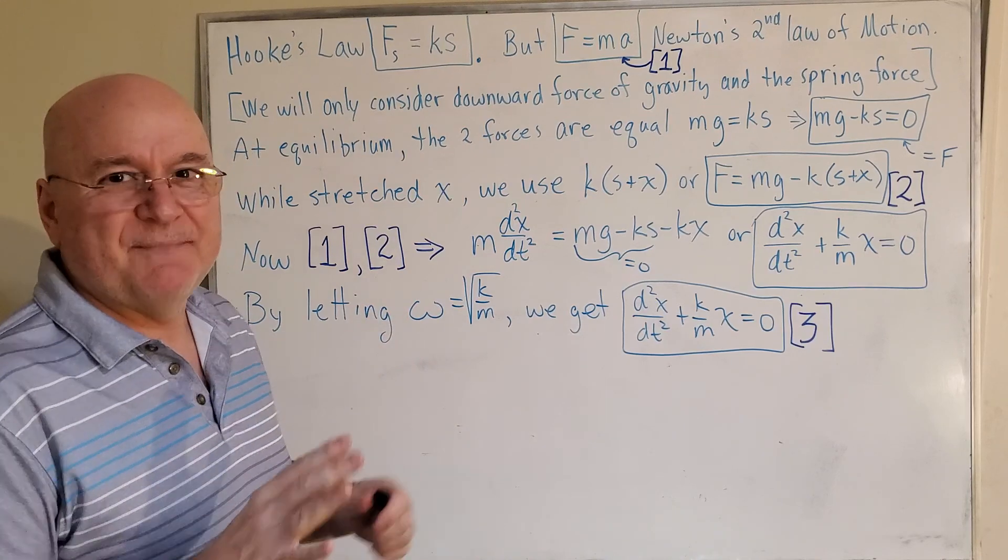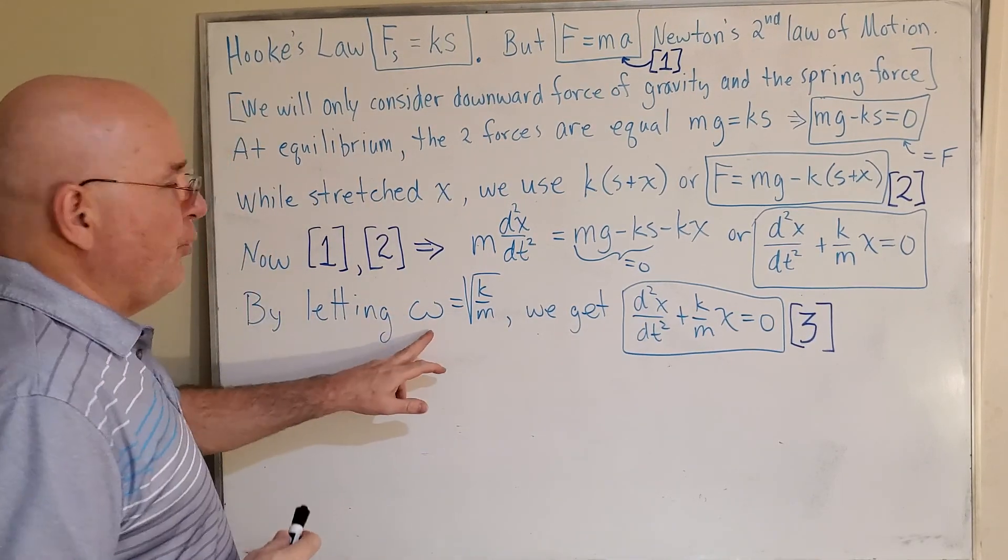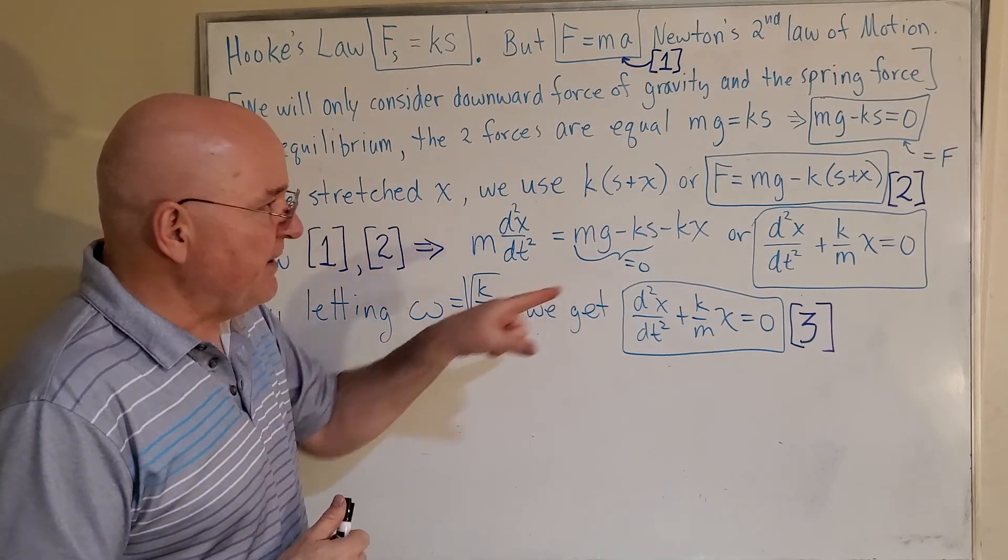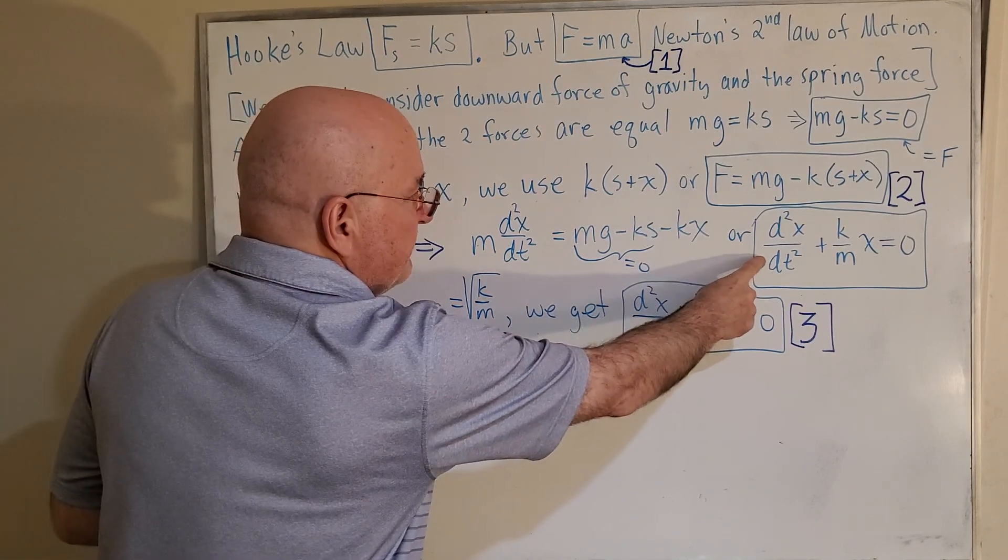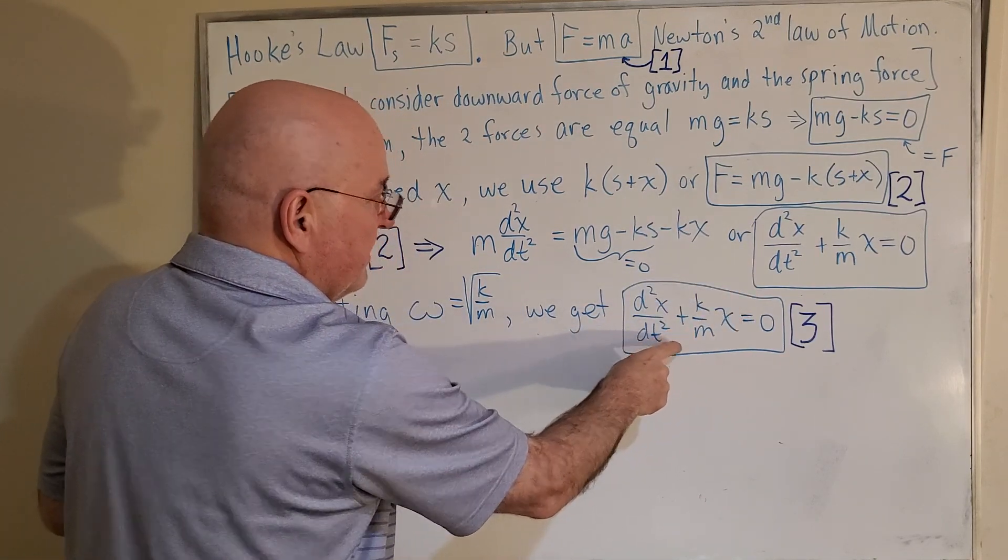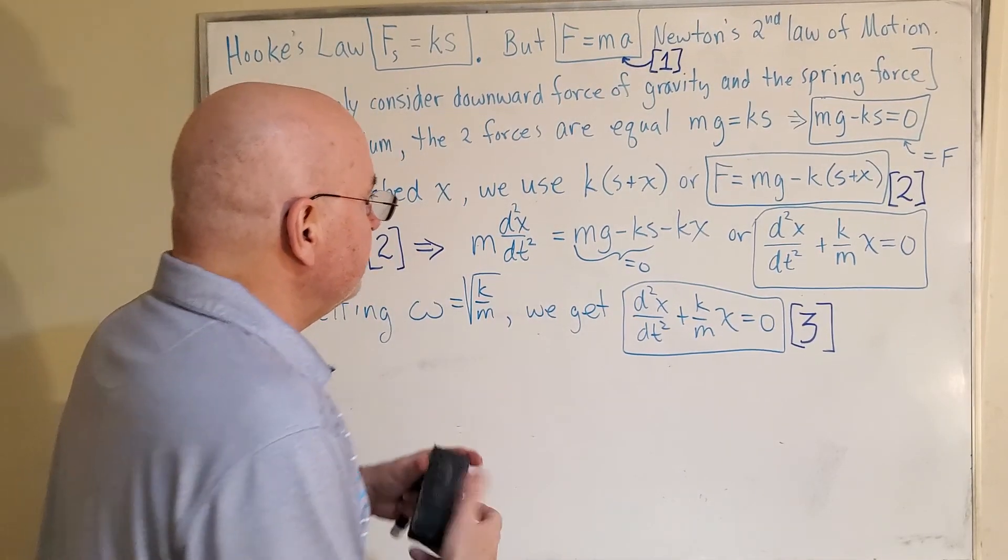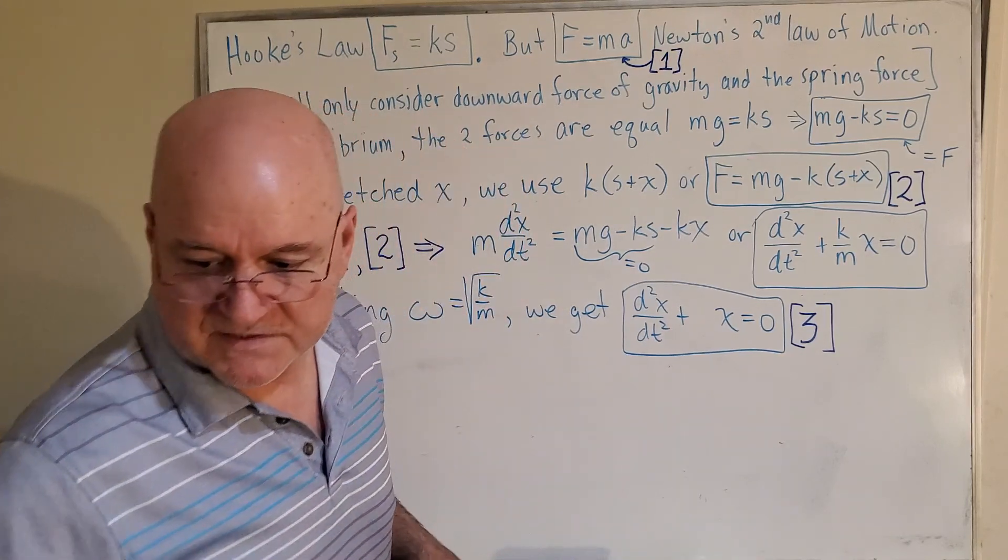Now we do one more little thing to make things work out more nicely. Basically, we let omega be radical K over M. So then this equation becomes this equation. I'm sorry, I wrote that incorrectly. This should be omega squared.